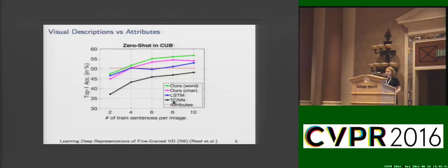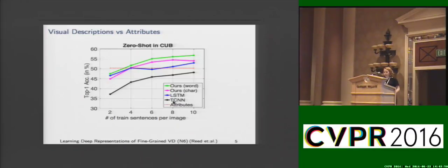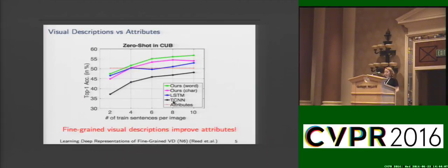The zero-shot learning accuracy on the Caltech birds dataset is shown in this plot. The reference number is attributes — that's the state of the art. Temporal CNN operating on characters already gives good results, but they don't reach attributes. Our method, character-level CNN-RNN, is the pink line that performs much better than TCNN. On the other hand, at the word level, LSTMs are better than attributes, and our word-level CNN-RNN improves over attributes and over any other method.